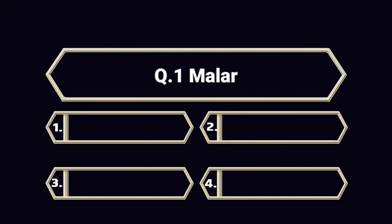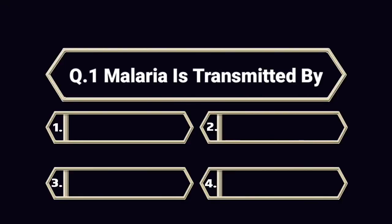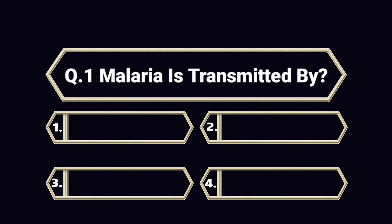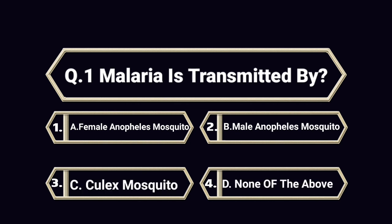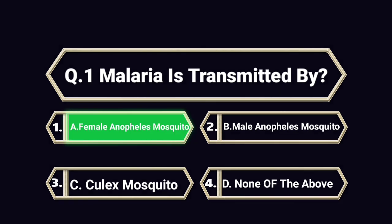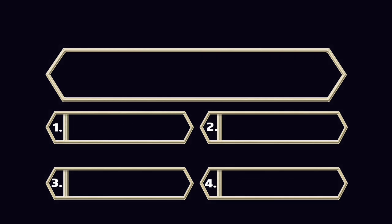Question number 1. Malaria is transmitted by. A. Female Anopheles Mosquito. B. Male Anopheles Mosquito. C. Culex Mosquito. D. None of the above. Answer is A. Female Anopheles Mosquito.